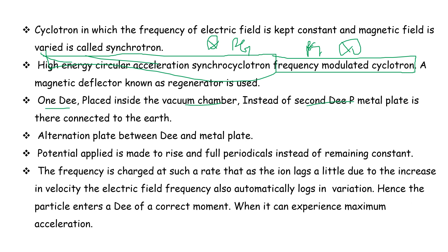The potential applied is made to rise and fall periodically instead of remaining constant. The frequency is varied at such a rate that the ion lags a little behind the increase in velocity, and the electric field frequency also automatically adjusts to this variation.